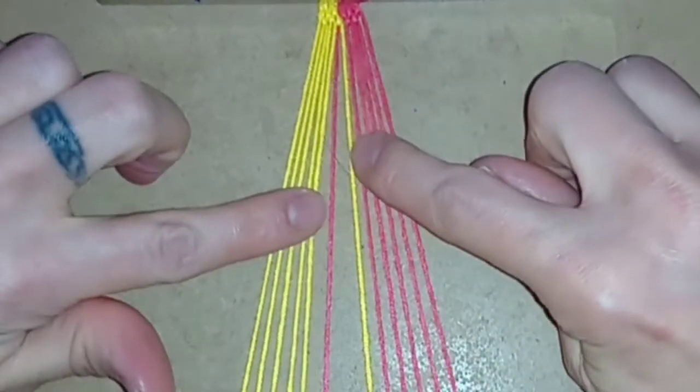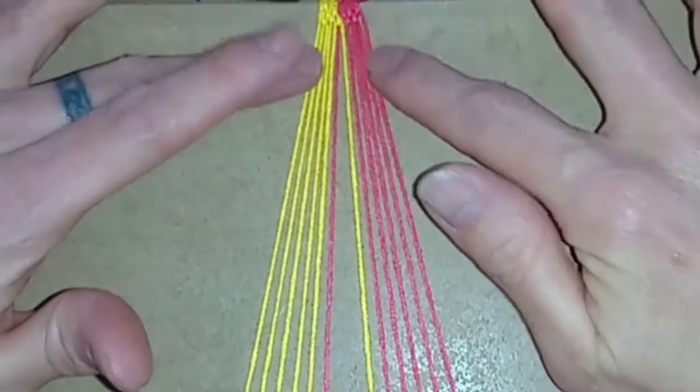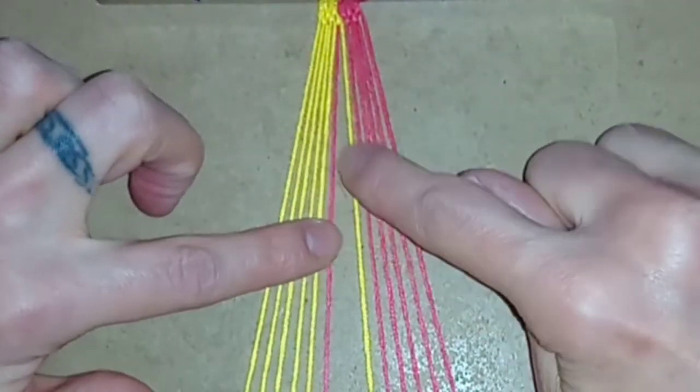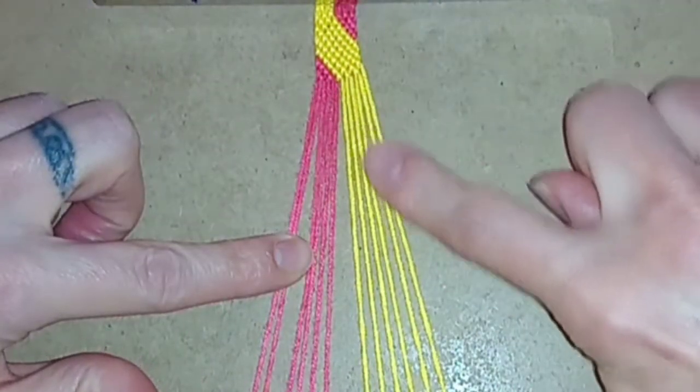After row two you'll see that you've switched the position of the two threads in the centre and you want to keep repeating rows one and two until you've swapped the position of all your threads. For me pink is now on the left and yellow is on the right.